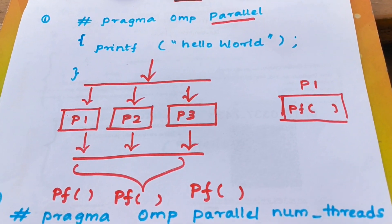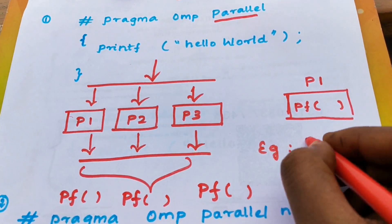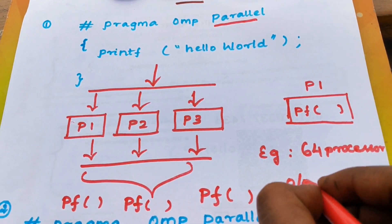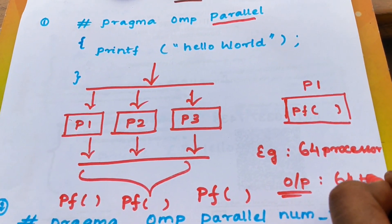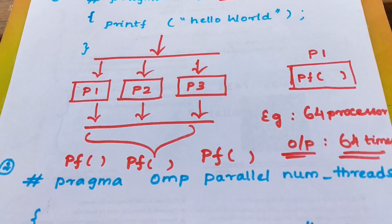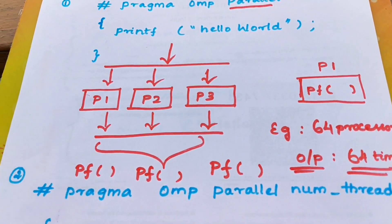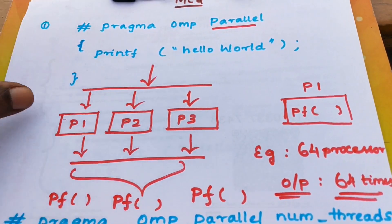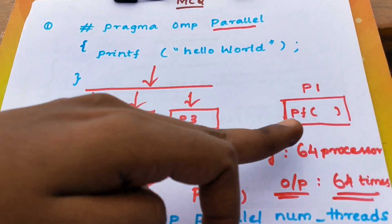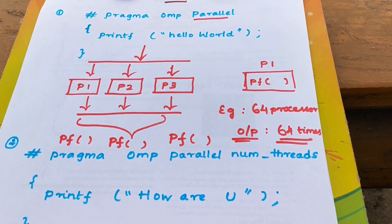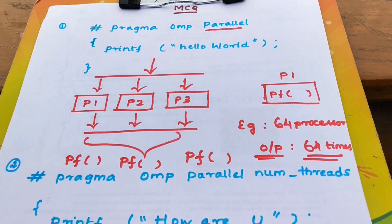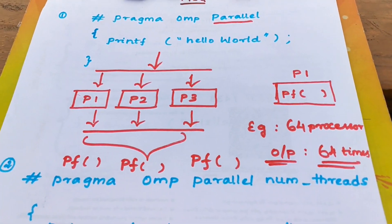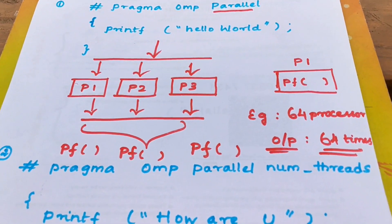There are many processors in this program. The idea behind this is single instruction executed by multiple independent processors, and then the instructions are executed in parallel. This is the OpenMP program — single instruction, multiple independent processor execution.